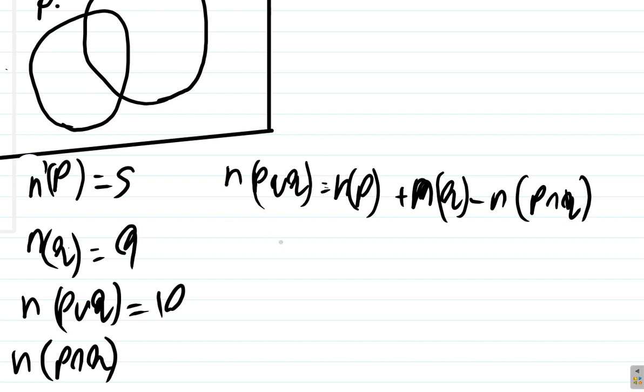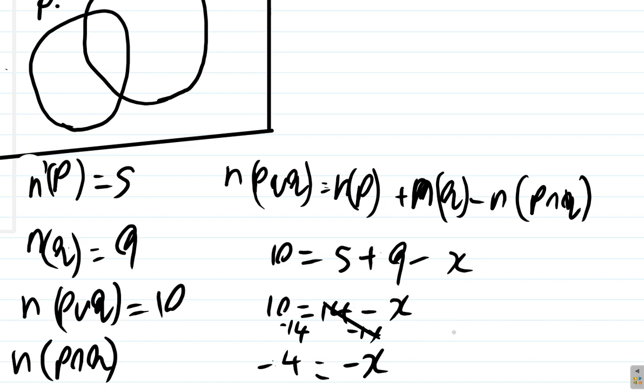So the number in P union Q is 10, which equals the number in P, which is 5, plus the number in Q, which is 9, minus the number in P intersect Q. Let's call it X. So 5 and 9 is 14, so 10 equals 14 minus X. If you subtract 14 from both sides, 10 minus 14 is negative 4. So negative 4 equals negative X, therefore positive 4 equals positive X. So X is 4.